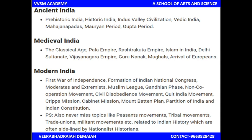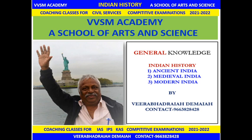Medieval India: coming to the classical age — Pala Empire, Rashtrakuta Empire, Islam in India, Delhi Sultanates, Karnataka Bahmani Sultanates, and Vijayanagara Empire. The great king Krishnadevaraya, followed by Aliya Ramaraya, Guru Nanak, Mughals, and arrival of Europeans. Modern India: the British, the First War of Independence, formation of Indian National Congress, moderates and extremists, Muslim League, Gandhian phase, Non-Cooperation Movement, Civil Disobedience Movement, Quit India Movement, Cripps Mission, Cabinet Mission, Mountbatten Plan, Partition of India, and Indian Constitution. These are very very important topics in our competitive examination question papers.